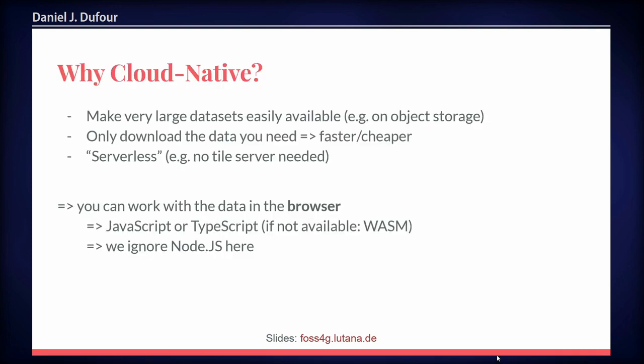So we need to go into the high-level information about what cloud native is. Cloud native geospatial basically means that you have very large datasets and you want to store them, usually with a web map service or something like that. But in this case, you would store them in a specific way that makes it cloud native, and you can then place it easily on object storage, and then only download the parts that you actually need — which is, in the end, faster and cheaper, both in costs and in time.